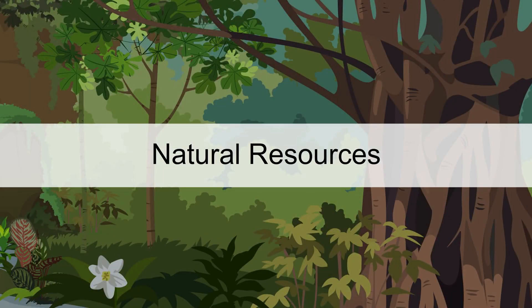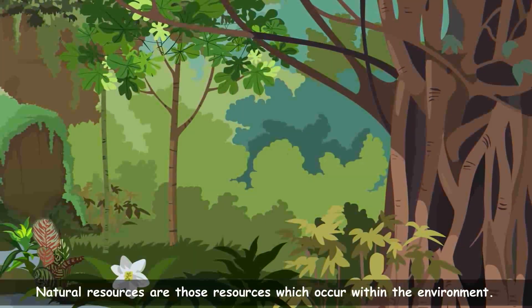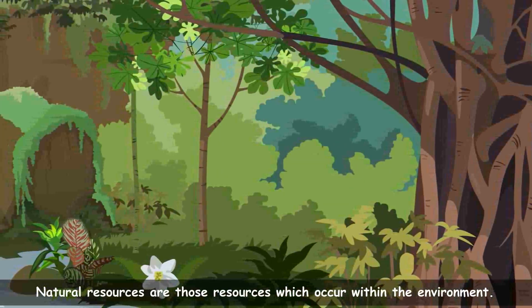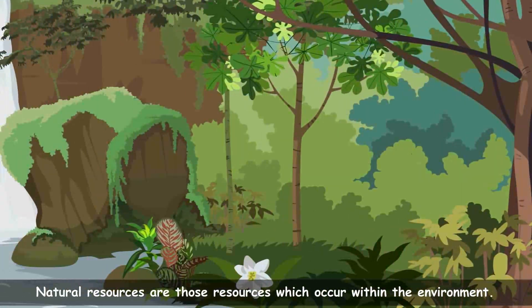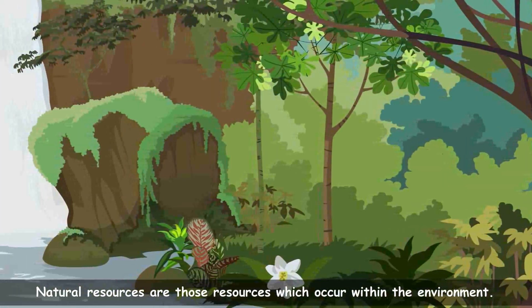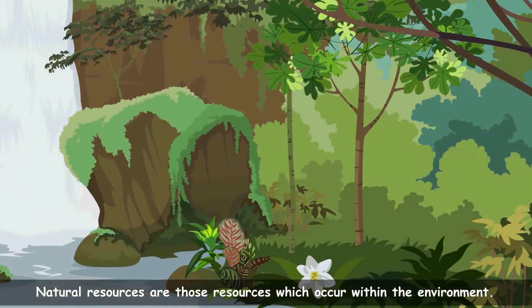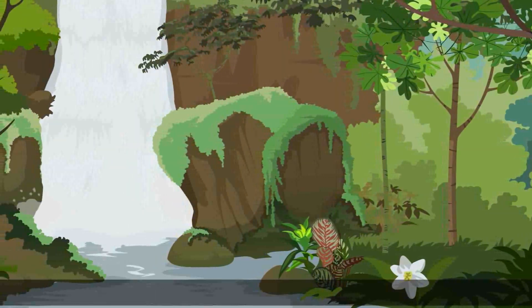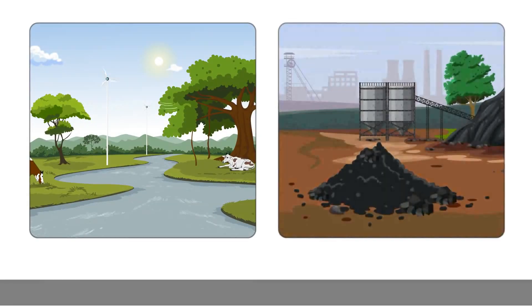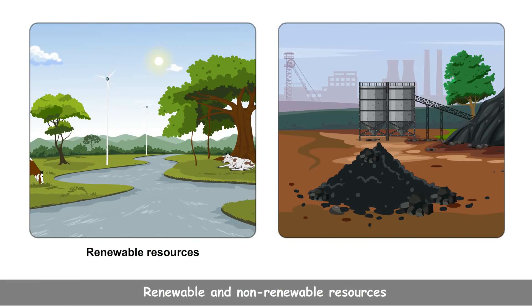Natural Resources are those resources which occur within the environment in their original and natural form, undisturbed by humanity. Natural Resources can be divided into two groups: renewable and non-renewable resources.